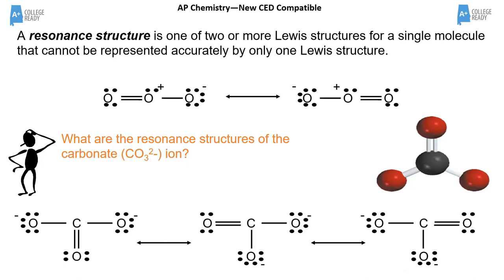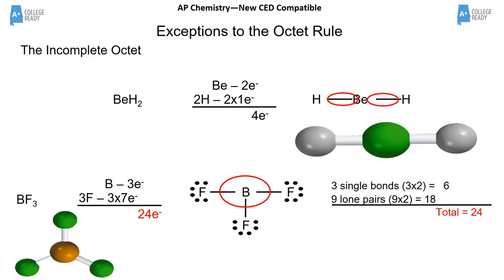Resonance means the double bond in a molecule doesn't actually stay fixed in one place — electrons are constantly moving. When you draw a Lewis structure you can't show electrons jumping, so resonance structures show the double bond on the left or on the right. For carbonate, the double bond could be at the bottom, left, or right — all three are valid resonance structures.